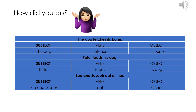The first sentence: 'The dog fetches its bone.' The subject is the dog, the verb is fetches, and the object is its bone. Next sentence: 'Peter feeds his dog.' Subject is Peter, verb is feeds, and object is his dog. In the next sentence: 'Leah and Joseph eat dinner.' Our subject is Leah and Joseph because the sentence is about both of them, our verb is eat, and our object is dinner.